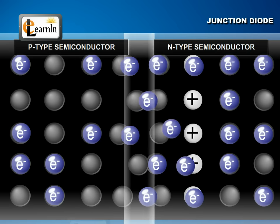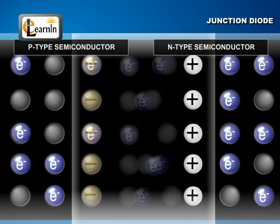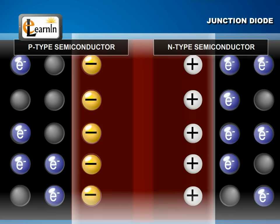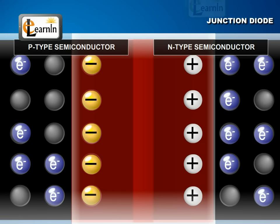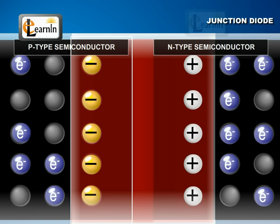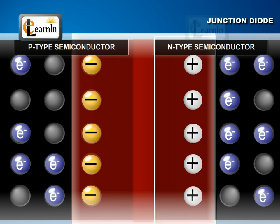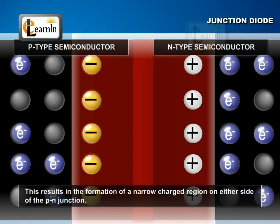So, at the junction, these electrons and holes combine with each other. The hole and electron neutralize each other on such recombination, as shown. Therefore, in the region close to the junction, only negative ions are left behind on the P-side, and only positive ions on the N-side. This results in the formation of a narrow charged region on either side of the PN junction.